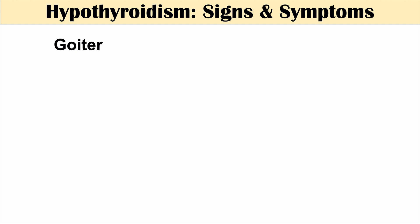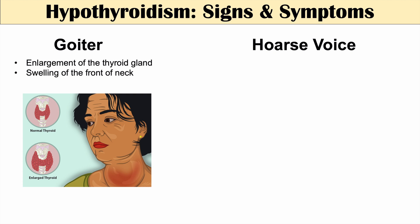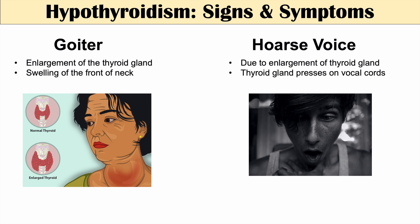In some cases of hypothyroidism, we can see goiter — an enlarged thyroid gland causing visible swelling at the front of the neck. Because of this enlargement, the thyroid can actually compress the vocal cords and cause a hoarse voice. So goiter and hoarse voice are additional signs of hypothyroidism.